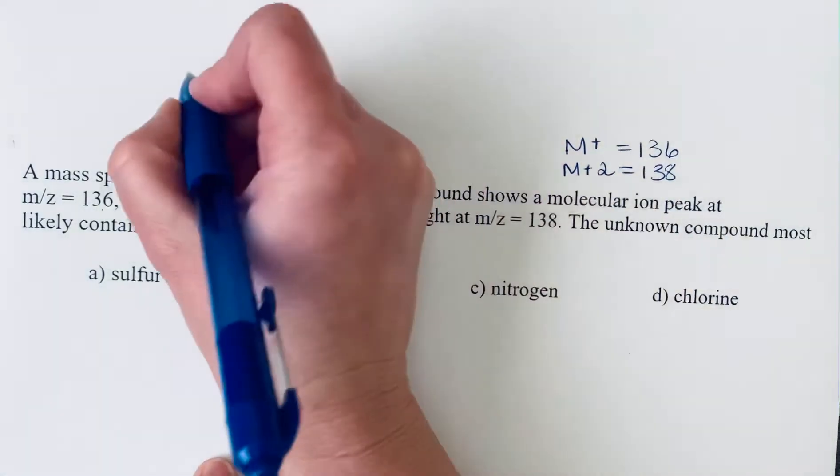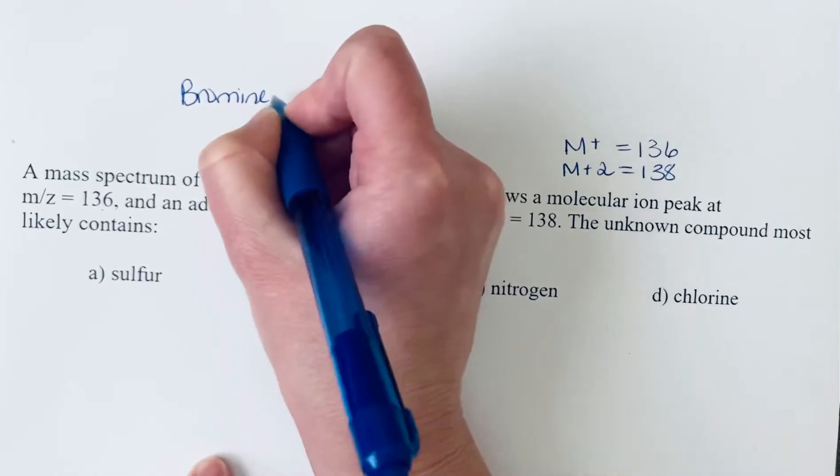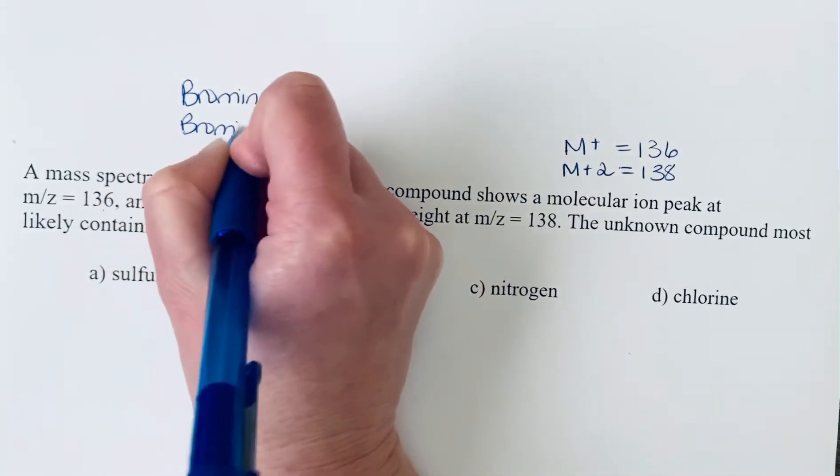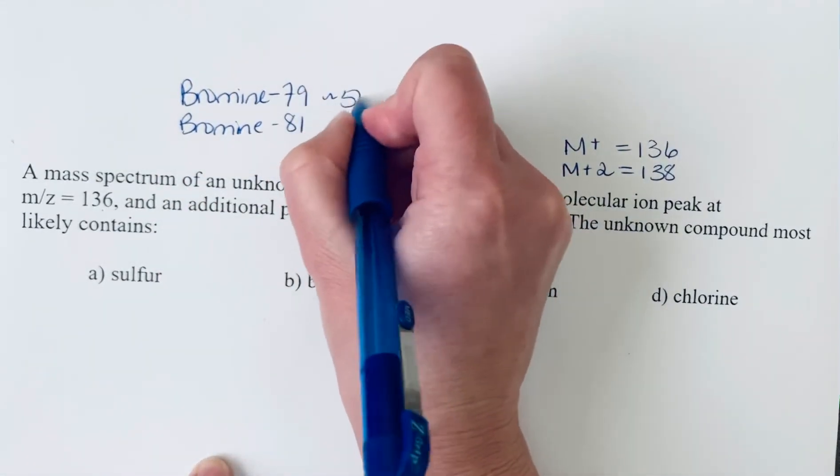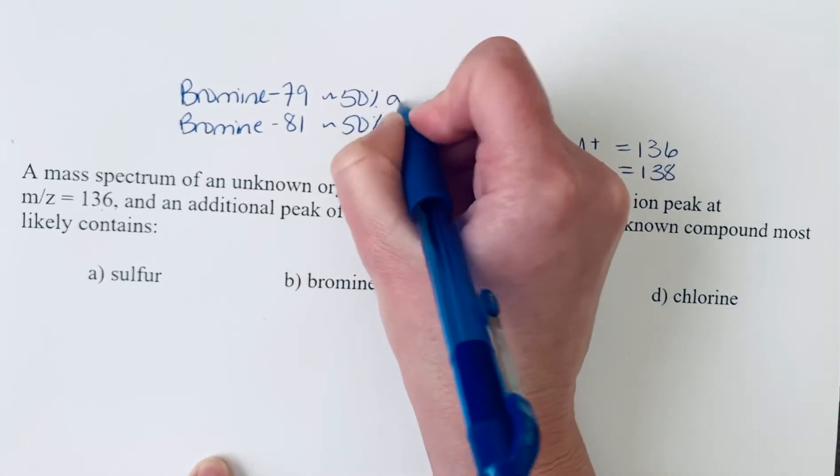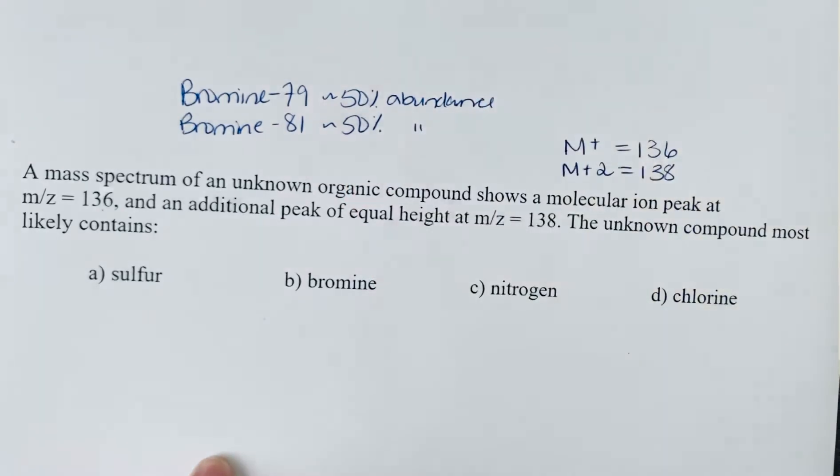For bromine, there are two isotopes: bromine-79 and bromine-81. These are both roughly 50% abundance.